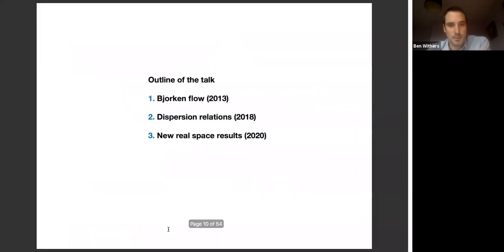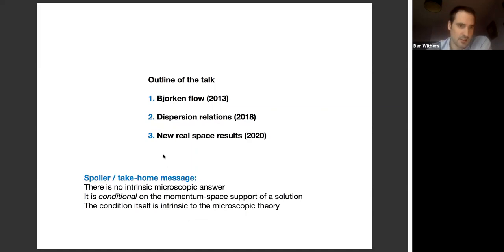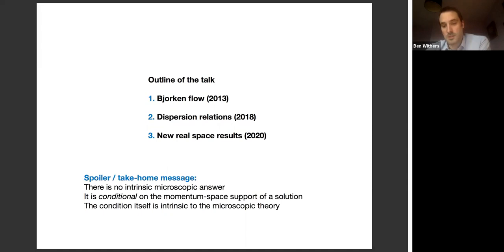That leads me to the plan of the talk. We'll begin with Bjorken flow, around 2013 in the holographic context, then dispersion relations around 2018, and recently real-space results from this year. As a spoiler: does it converge? Well, the answer is there's no intrinsic microscopic answer in isolation. The expansion is conditional on the momentum-space support of any given solution. If you give me a microscopic theory and a solution, then you can get the answer. The condition itself is intrinsic to the microscopic theory.